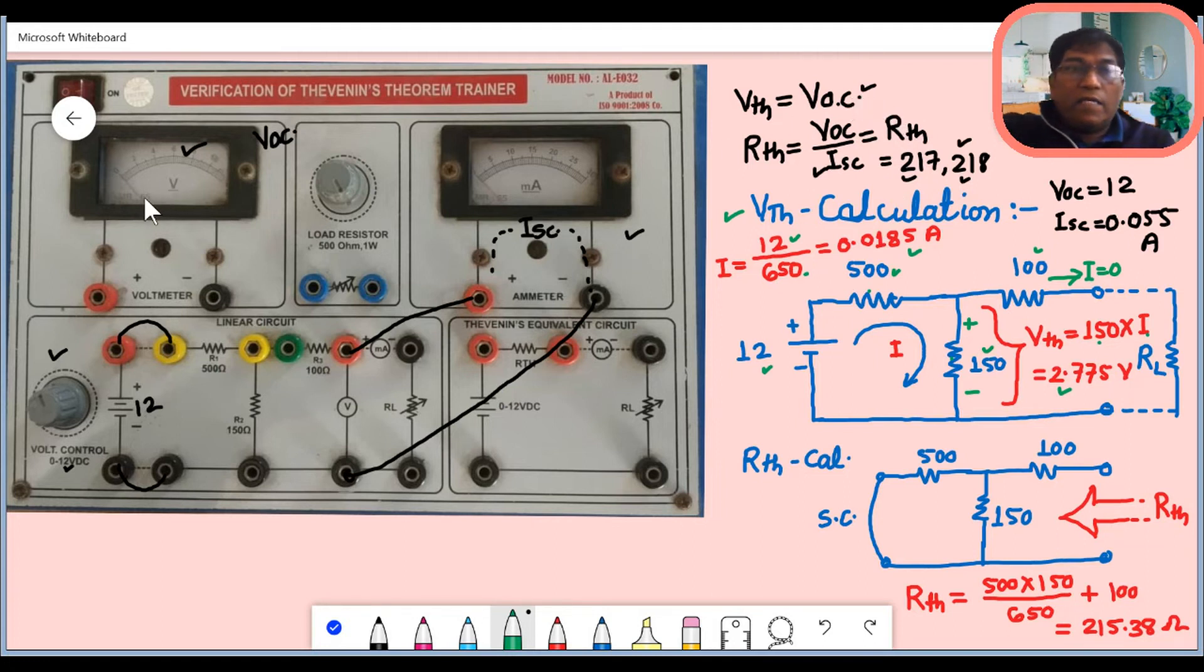If you see the meter reading that we took earlier by the meter, the meter reading is also approximately coming out to be equal to 2.78 or 79. This is VOC, the recorded reading. There is a difference between calculated and recorded. Recorded means experimental kit, calculated means solving the problem theoretically.